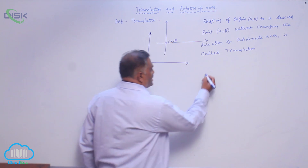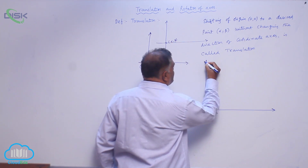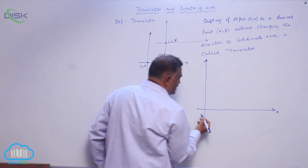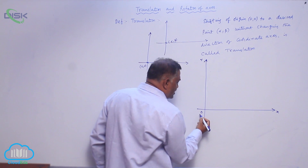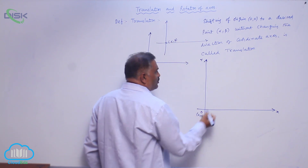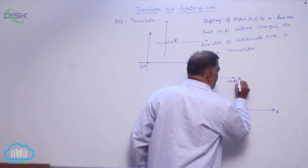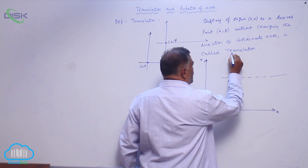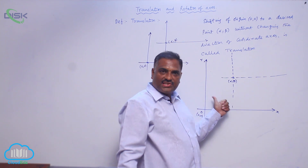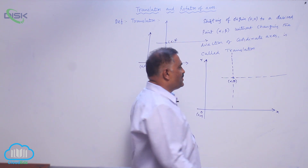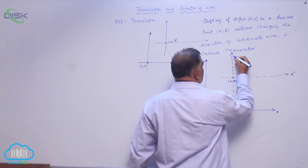Now let us draw a figure. Here, this is called the old x-axis and this is the old y-axis. Let us shift the point (0,0) to some desired point (α, β), thus forming another new axis. I wrote thick lines for the old system and dotted lines for the new system — this is the new x-dash axis, and this is the new y-dash axis.